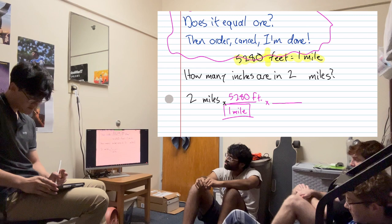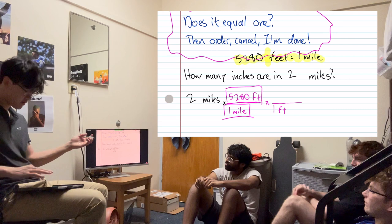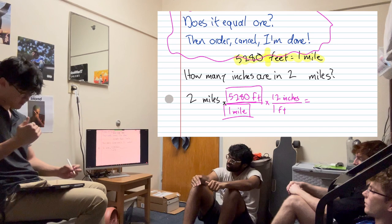Right. And how many inches are in a foot? We learned it. 12. 12. Good. So, since there's already a feet on the top, we've got to order and then cancel. Equal 1. Guys, say it with me. Does it equal 1? Then order. Cancel. I'm done.